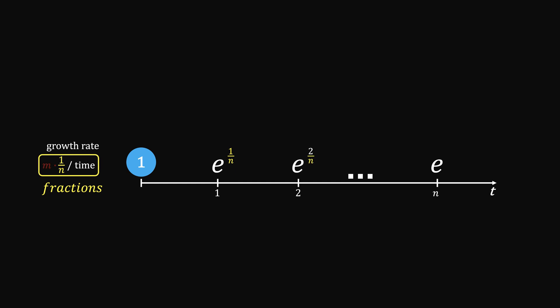Now, what if the rate is m times of that? Whenever you speed up the rate, it will show up on top of e. So 1 unit time, it becomes e to the power of m over n.